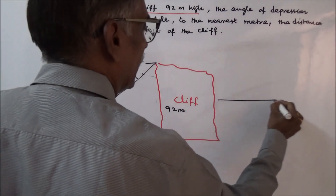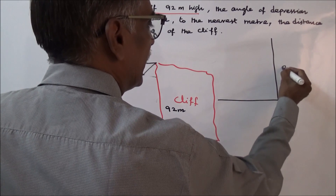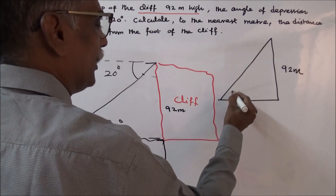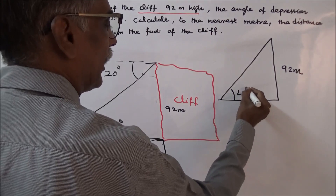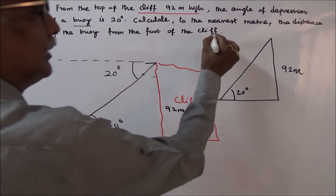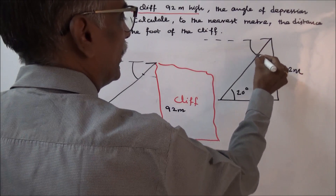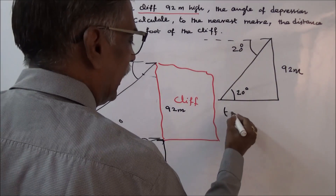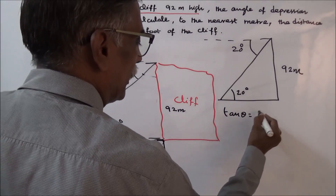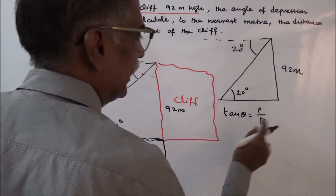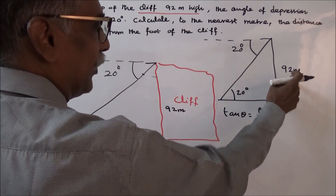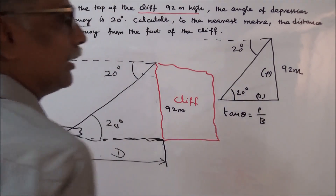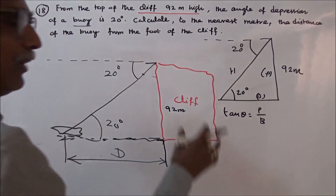It's a very simple triangle. The height distance is given as 92 meters, and the angle of depression here is 20 degrees — this is also 20 degrees. We have to calculate using tan theta. Tan theta is equal to perpendicular by base. The opposite to the acute angle is the perpendicular; this is the perpendicular, and this is the base. This is the hypotenuse. We have to calculate the base.